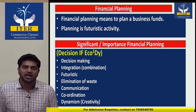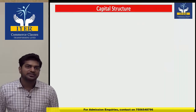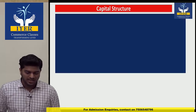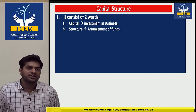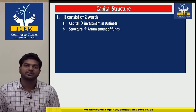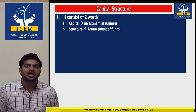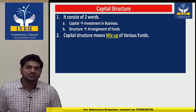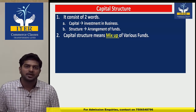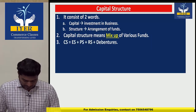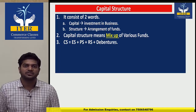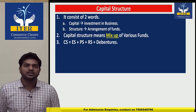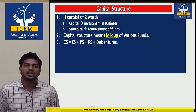Next topic is capital structure. It consists of two words: capital means investment in business, and structure means arrangement of fund. Capital structure means mix up of various funds — whenever you see 'mix up,' the answer is capital structure. The formula: CS (capital structure) = ES + PS + RS + Debenture, i.e., equity share + preference share + reserves + debenture. When all four funds mix, that is our capital structure.